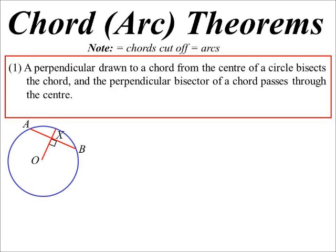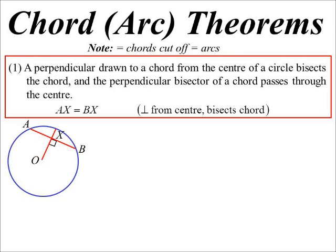Let's look at that situation. If OX is perpendicular to AB, then I know AX equals BX because the perpendicular from the center bisects the chord. It's also true that arc A equals arc B, because the perpendicular from the center bisects that arc as well.